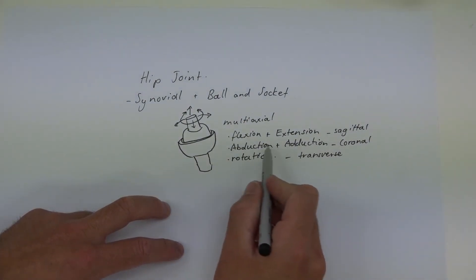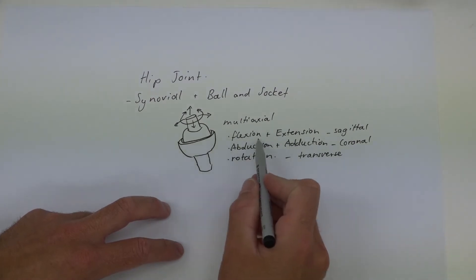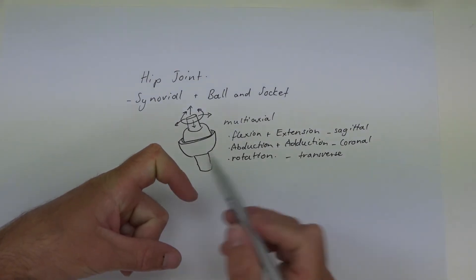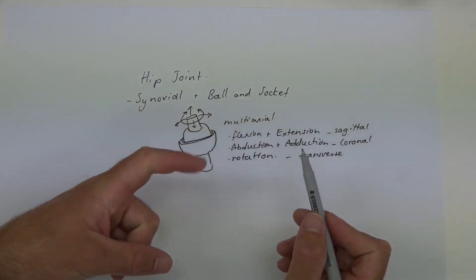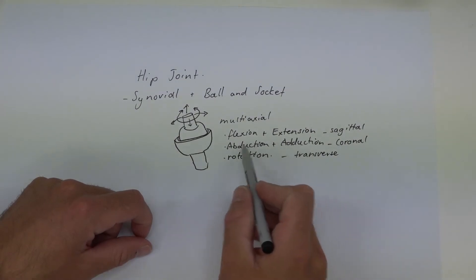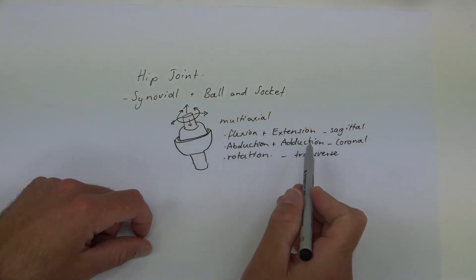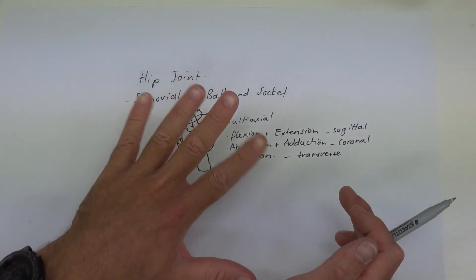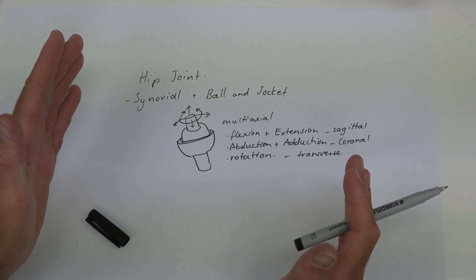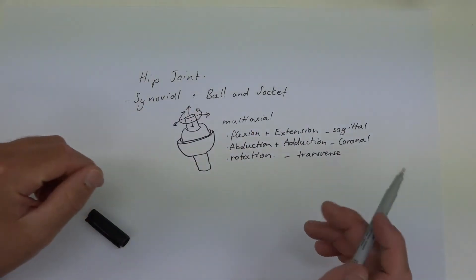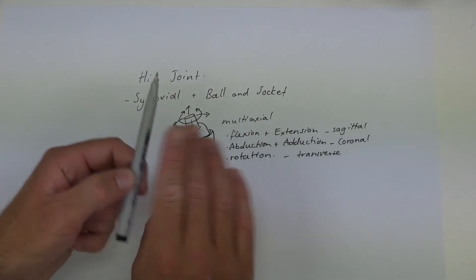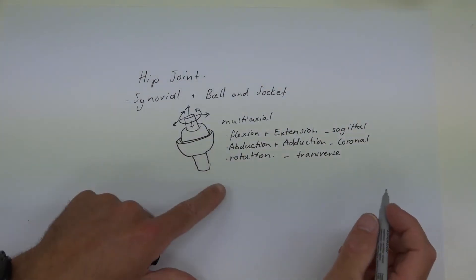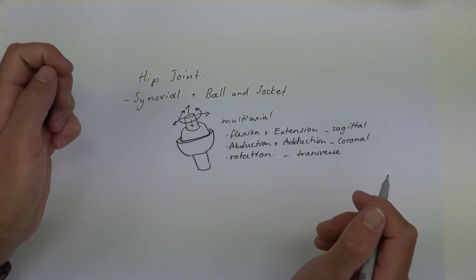Flexion is to reduce any joint angle — for example, bending a finger to 90 degrees is flexion, and straightening it back out is extension. Abduction and adduction describe motion away from and towards the midline, respectively — moving the leg away from the body is abduction, and bringing it back is adduction. Rotation turns your foot inward or outward, and these types of rotation are called internal and external, or medial and lateral.